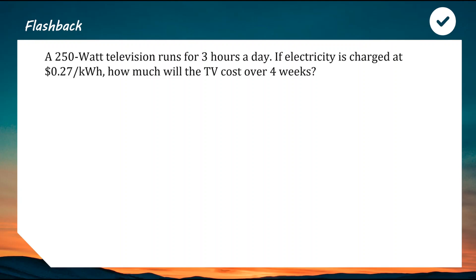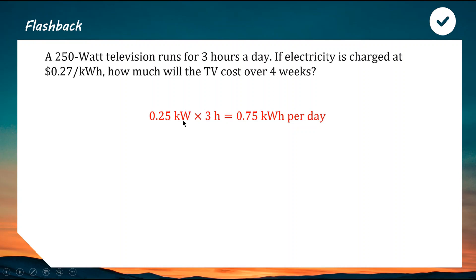The goal of this question is to figure out how many kilowatt hours this TV is going to use over four weeks and then multiply that by 27 cents. A 250 watt television — divide by 1000 to turn this into kilowatts, because one kilowatt is 1000 watts. So 250 watts is 0.25 kilowatts. Multiply by 3 hours per day: 0.25 times 3 is 0.75 kilowatt hours per day.